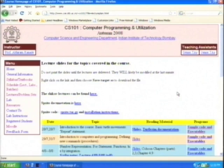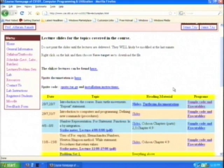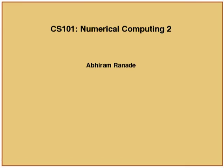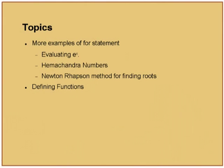There are lecture slides for the topics covered in the course. Take this Newton-Raphson method — this is from Kuhun chapter 4.9. This is just a sample. What I like is the evolution of a lecture. This is a typical lecture — more examples of for-loop statements evaluating e to the power x, Hemchandra numbers, and Newton-Raphson method. He is making it clear upfront what he is concentrating on and giving two problems.